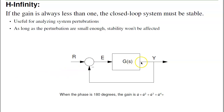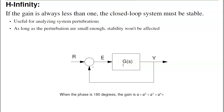H-infinity works as follows: if I have a feedback system, the closed-loop gain g of s is a plus a squared plus a cubed when the phase shift is 180 degrees. One way to prove stability is if a is always less than 1, then I can never have positive feedback where the gain goes to infinity. If I can show that the loop gain is less than 1 at all frequencies, I can guarantee the closed-loop system is stable, even if it's nonlinear. One application is perturbations — if I have a stable system and I perturb it, if the perturbation times the system gain is less than 1, I know it's stable.